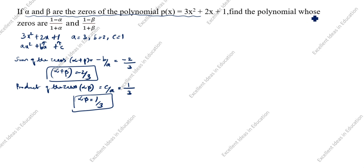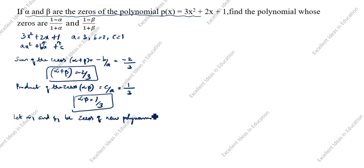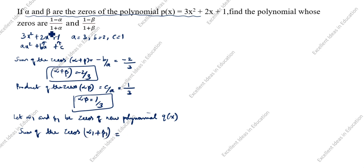We will find the polynomial whose zeros are (1 - alpha)/(1 + alpha) and (1 - beta)/(1 + beta). Let alpha₁ and beta₁ be the zeros of the new polynomial q(x). The sum of the zeros: alpha₁ + beta₁ = (1 - alpha)/(1 + alpha) + (1 - beta)/(1 + beta).